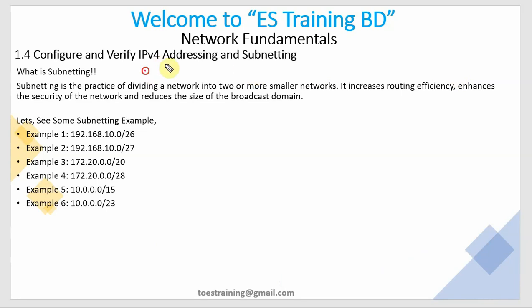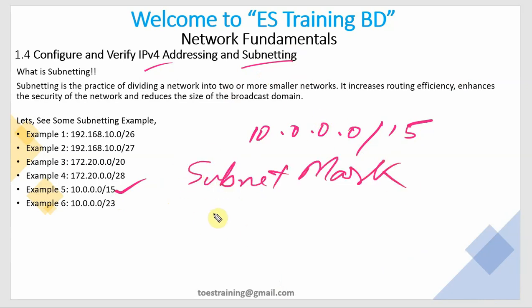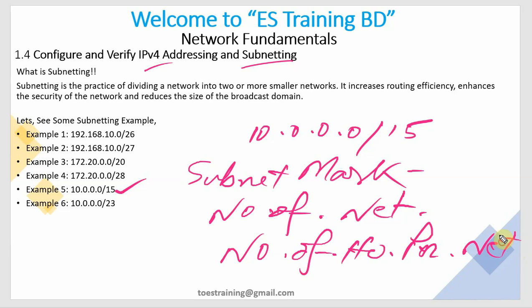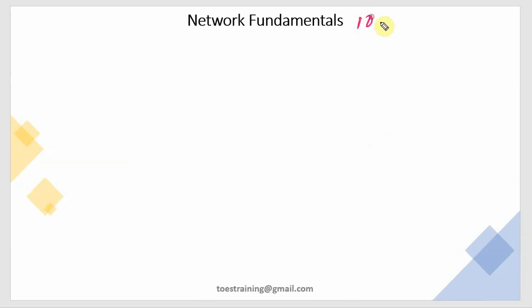Once again, welcome back to IPv4 addressing and subnetting. Our target is 10.0.0.0 slash 15. Our prefix is 15. We will first calculate the subnet mask, then the number of networks, then the number of hosts per network. So let's start.